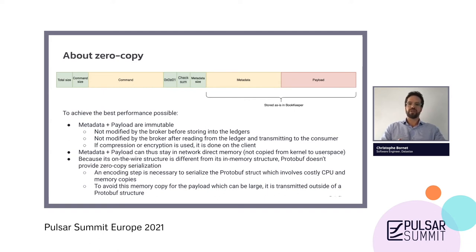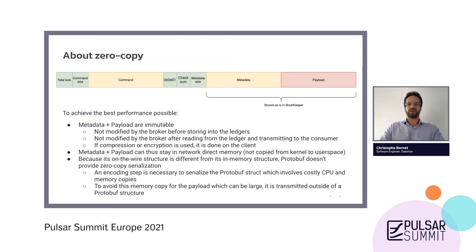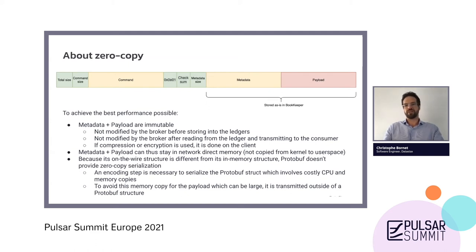Another important point about zero copy: it's not possible to have zero-copy serialization using protobuf because protobuf has a distinct structure in memory compared to on the wire. There are new protocols that have emerged such as Cap'n Proto, Flatbuffers, or SBE, which have a direct representation of the wire format in memory. Since that was not the case for protobuf, instead of including the payload inside protobuf — which would mean copying the payload when serializing it — the protocol sends the payload outside of the protobuf message, encoded inside the global framing of the message.